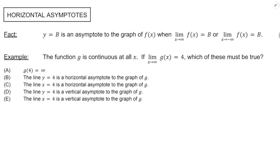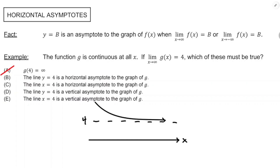Quick multiple choice example: if the function g is continuous at all x and the limit of g as x approaches infinity is 4, which of these must be true? First, eliminate option A immediately — it says g of 4 equals infinity, and infinity is not a real number, so that's not a valid mathematical statement. Now, x is approaching infinity means the graph of g is getting closer and closer to 4 — that's a horizontal asymptote, not a vertical asymptote. So eliminate answer choices D and E.